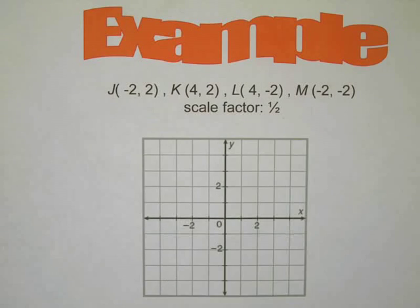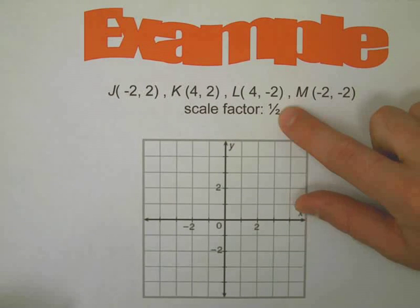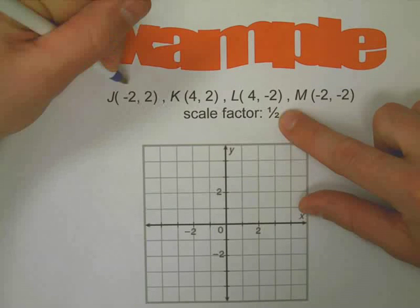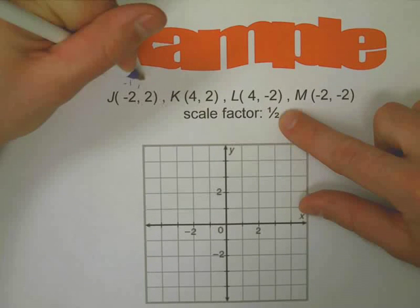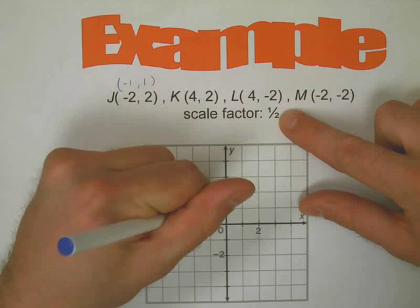Let's do one more example and then I'm done with this video. Let's draw JKLM after it's been reduced by a scale factor of one half. So that's going to be smaller, no rotation because it's positive. Basically I could just do, what's half of negative two? Negative one, positive one. Let's go find that, that's J prime.